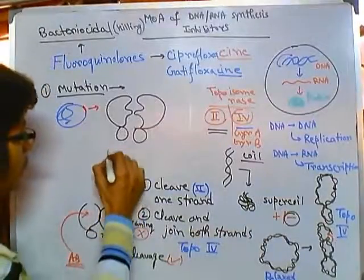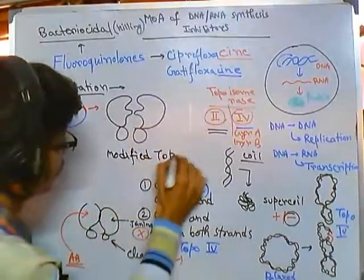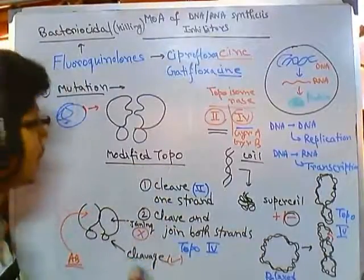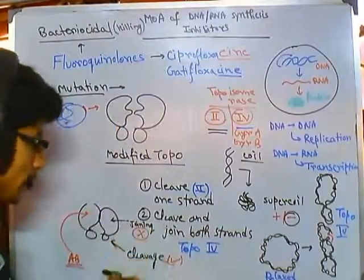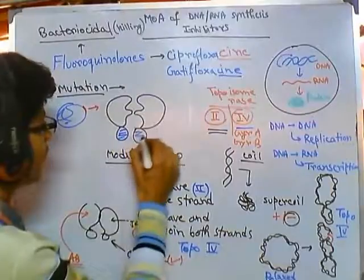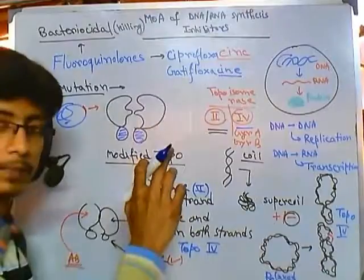Now this is modified topoisomerase or modified gyrase. As a result of this modification, remember, among these two parts, the cleavage subunit won't be affected by the antibiotic. The affecting part will be this joining region.